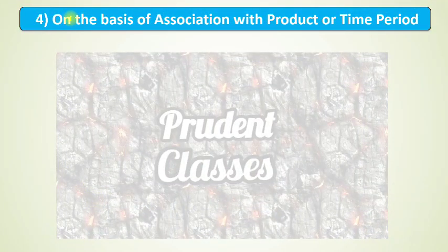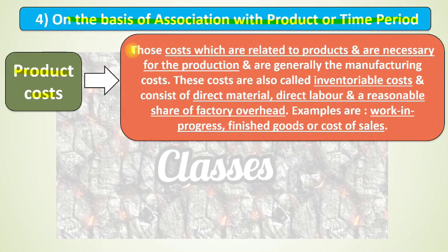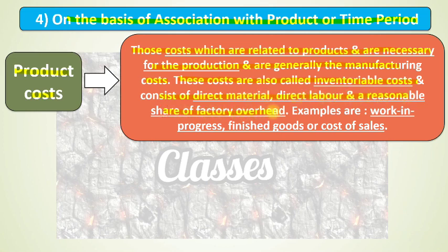We will now classify cost on the basis of association with product or time period. The first type is Product Cost — costs which are related to products and are necessary for production, generally manufacturing costs. These costs are also called inventoriable costs and consist of direct material, direct labor, and a reasonable share of factory overheads.